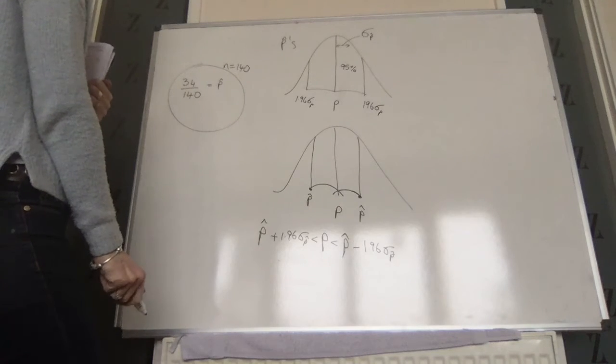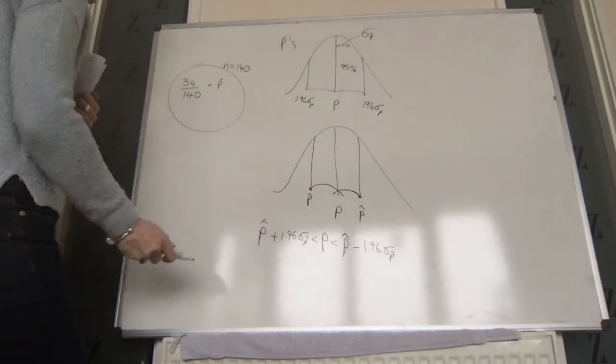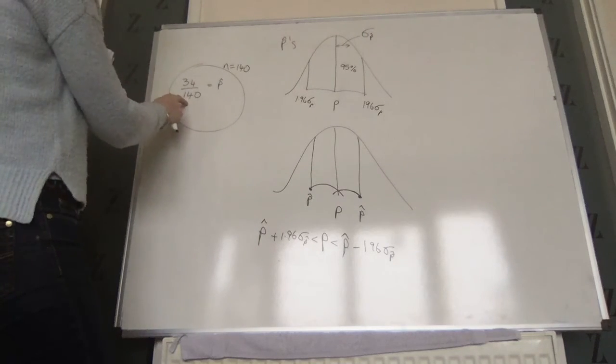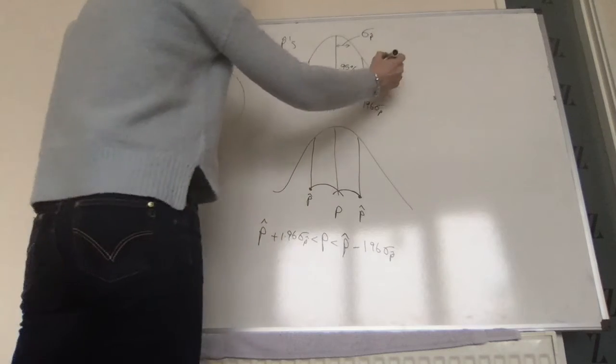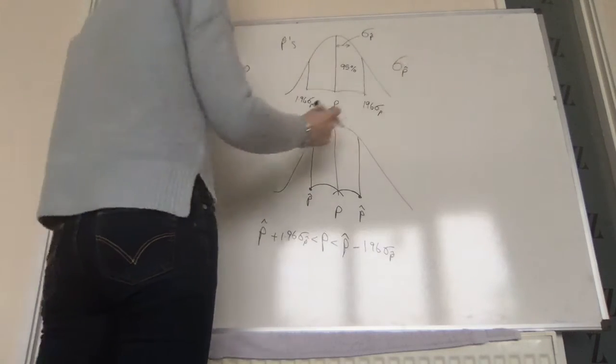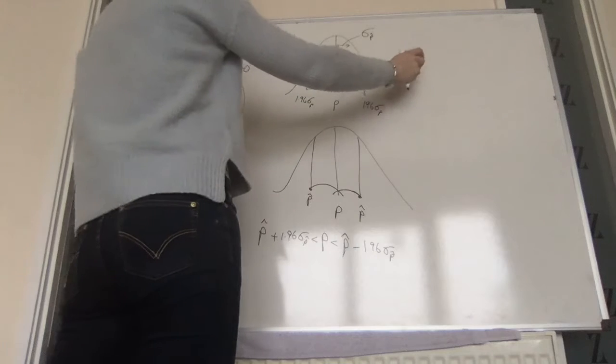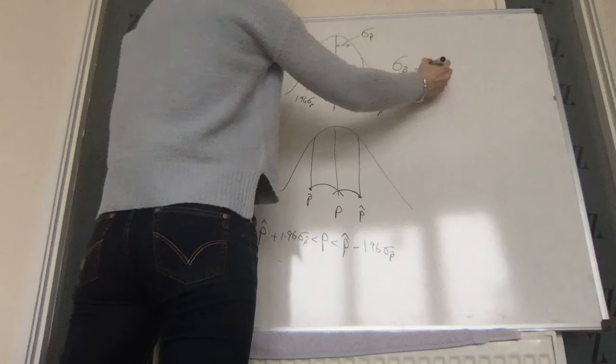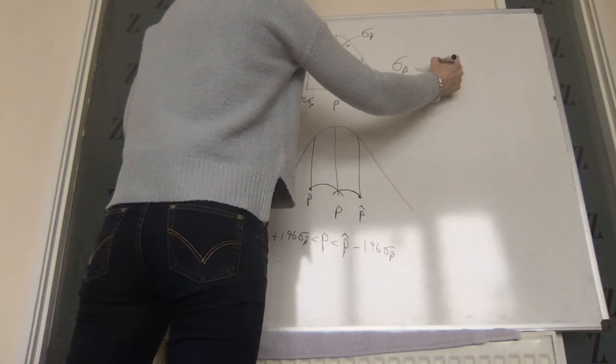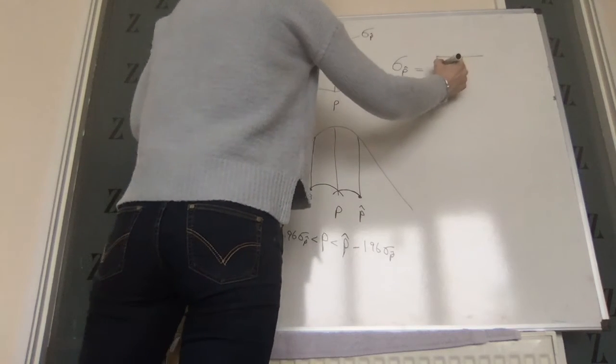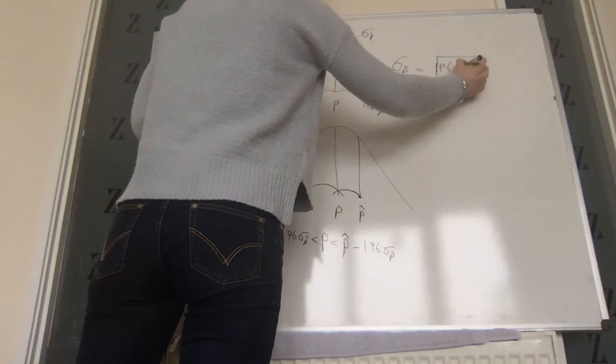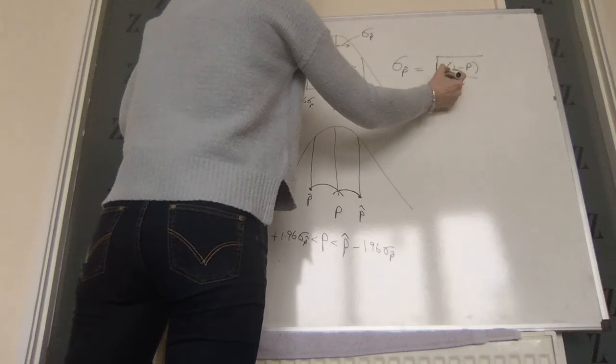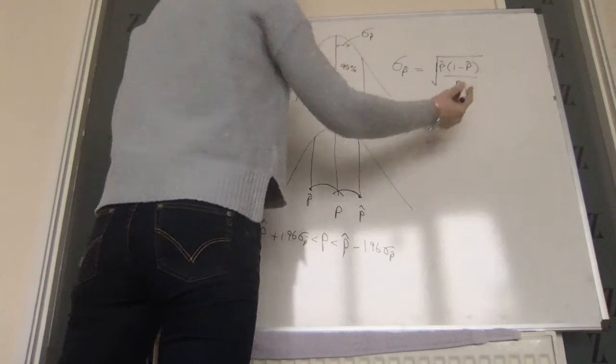So all we need to do now is fill in the values. P-hat we have here. Our sigma p-hat from the log tables, the standard error of the distribution of the proportions. From the log tables, the formula is the square root of p times 1 minus p over n. Now we don't know p, so we use p-hat in this formula.